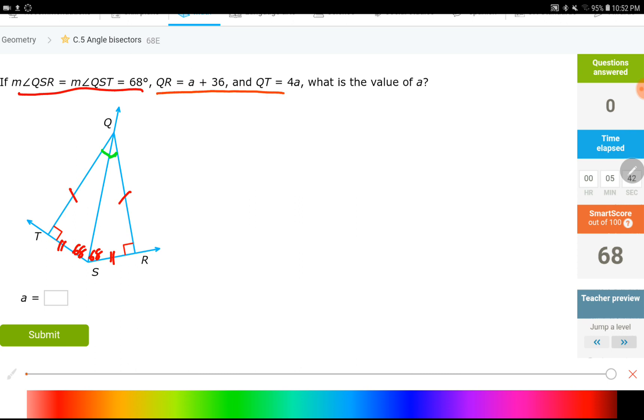Q, R, and Q, T. Q, R, and Q, T are the red sides on the left and right. A plus 36, Q, R. And then, Q, T is 4A. And these two should be equal. Let's set them up equal to each other. A is going to be 12, I think. 3A equals to 36. Divide by 3. A equals to 12, which was our question.